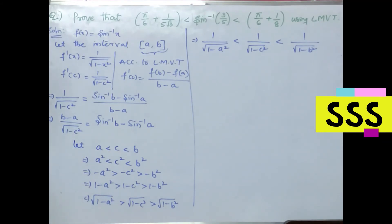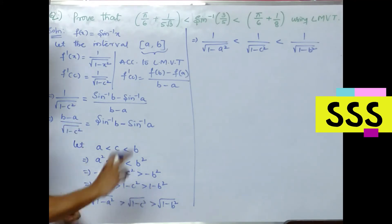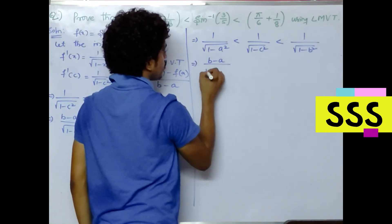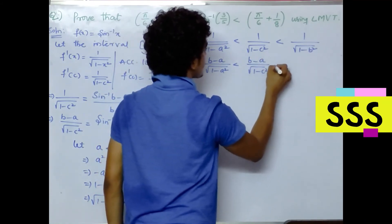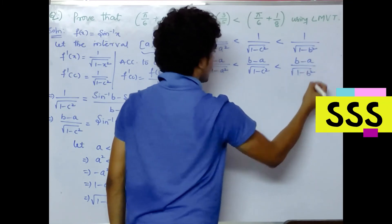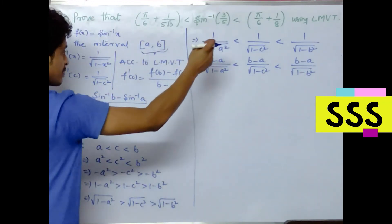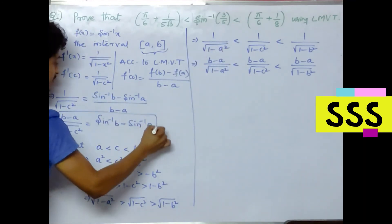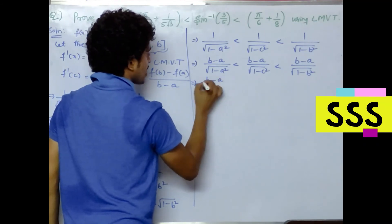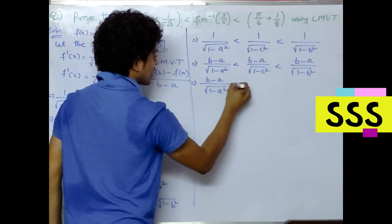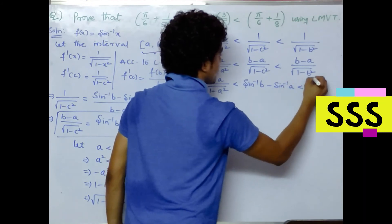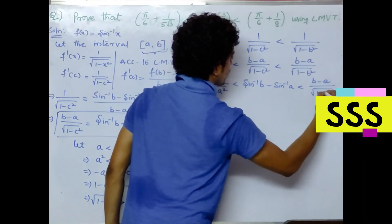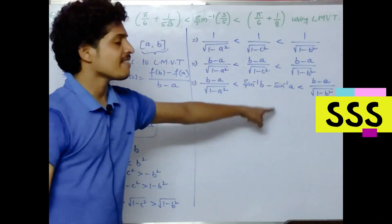So: 1/√(1 − a²) < 1/√(1 − c²) < 1/√(1 − b²). Multiplying all terms by (b − a): (b − a)/√(1 − a²) < (b − a)/√(1 − c²) < (b − a)/√(1 − b²). Since (b − a)/√(1 − c²) = sin⁻¹b − sin⁻¹a, we substitute to get the full inequality.